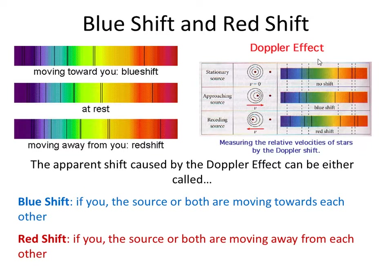So how do blue shift and red shift actually look? Here is a spectra of a star at rest, showing absorption lines at specific wavelengths — these occur when electrons absorb photons of a very specific wavelength as they move to an outer energy shell. If the star moves towards me, all the lines shift towards the blue part of the spectrum — blue shift. If the star moves away from me, all the lines move towards the red part of the spectrum — red shift.